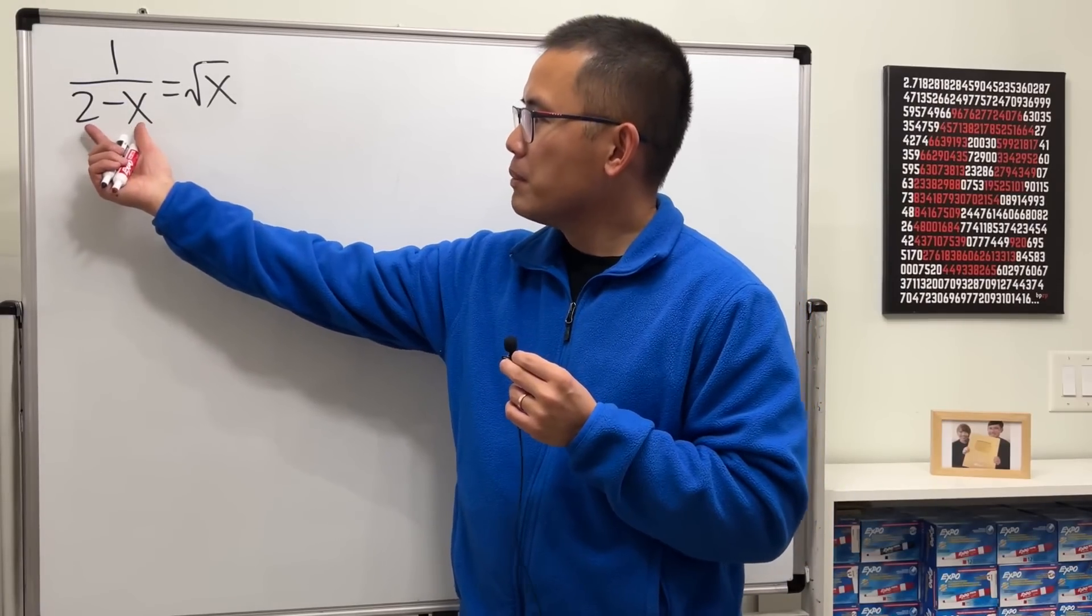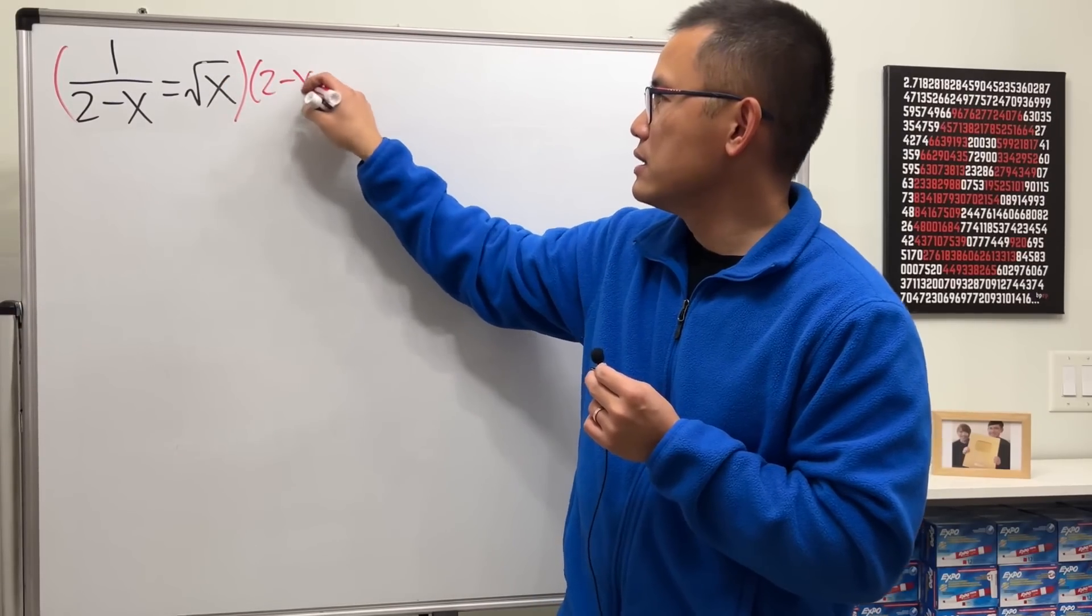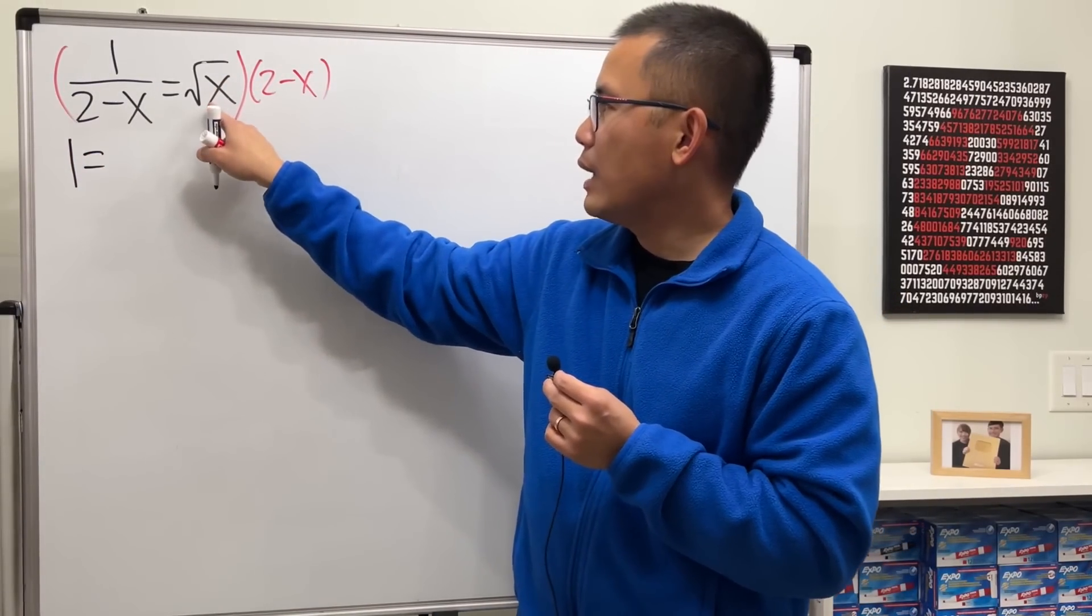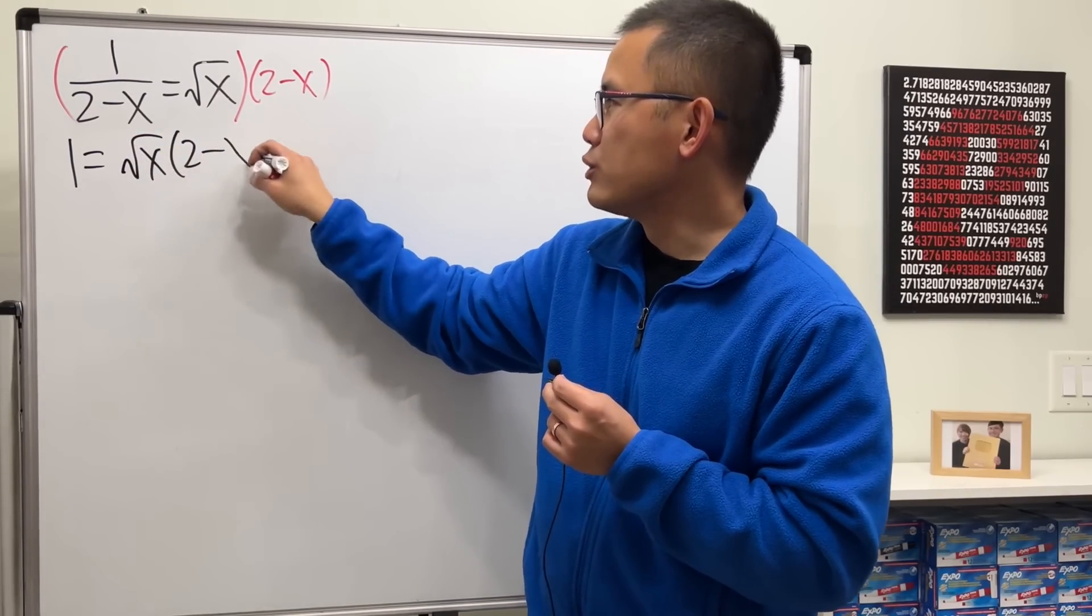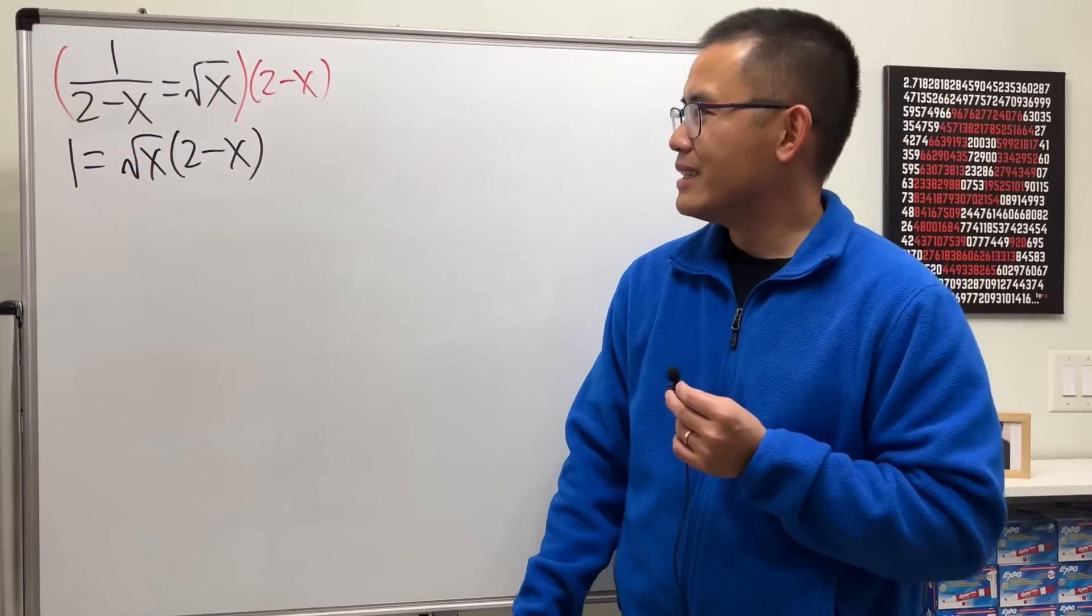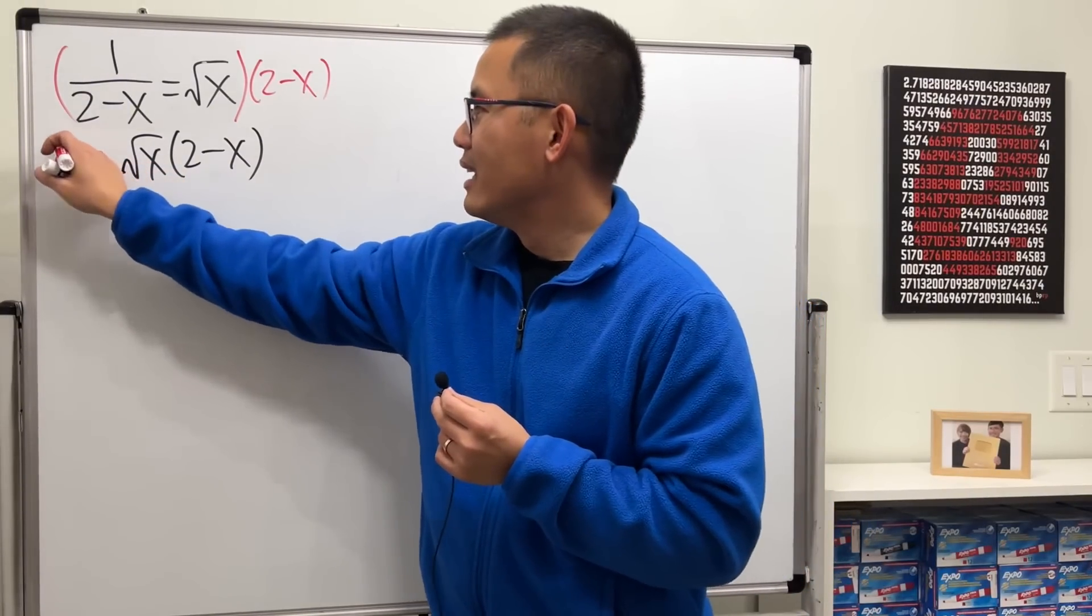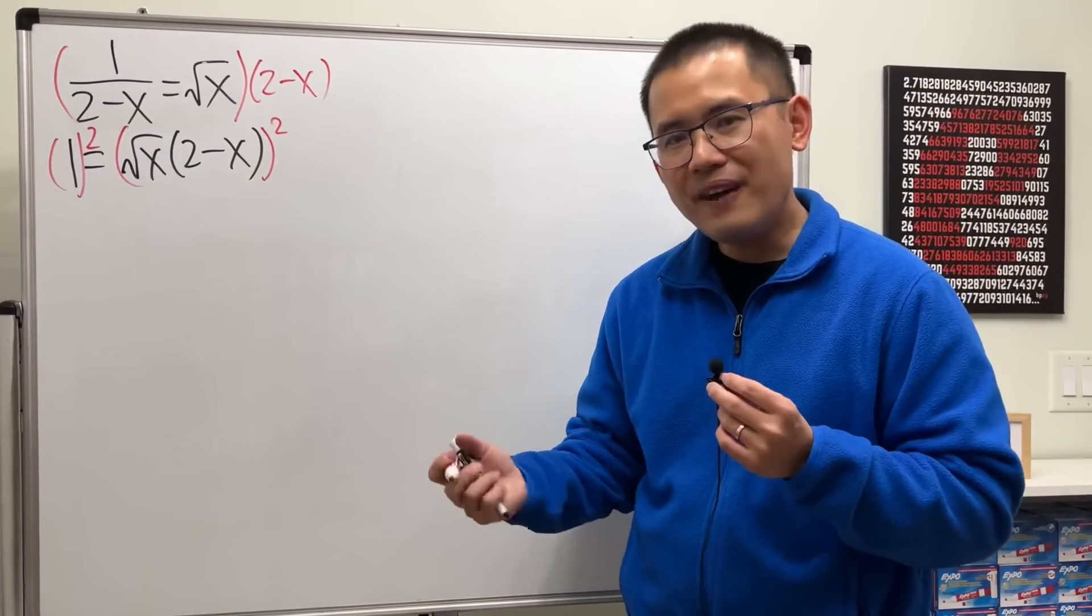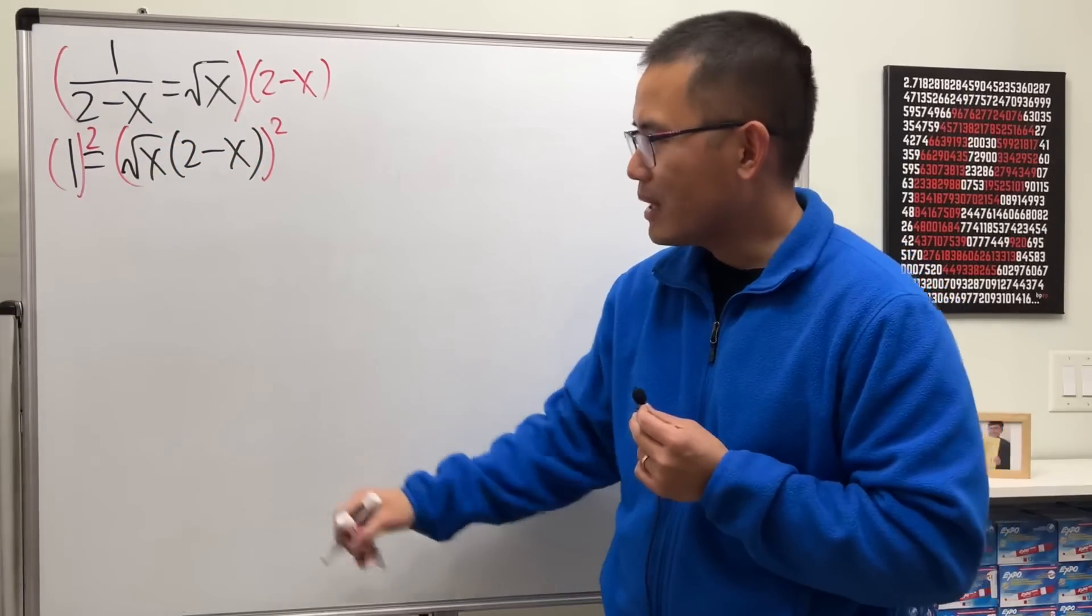First, let me multiply the denominator to both sides so we don't have to deal with fractions. So this times that will just be 1. And then I will just put this times that. I'm not going to distribute it. Because I want to get rid of the square root. We can do so by squaring both sides. And in fact, if you want to square both sides first, that's fine too.